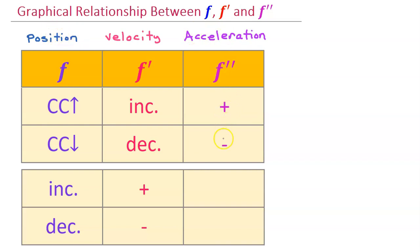So all of these relationships between positive, negative, increasing, decreasing, concave up and concave down, now apply to position, velocity, and acceleration.